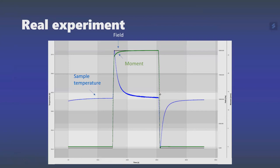That was just a cartoon, but looking at real temperature measurements: we apply field quickly — shown in black — and see the sample heats up quickly. I intentionally didn't isolate the sample properly, so it relaxes back to initial temperature. Removing the field quickly, the sample cools. It's not just a cartoon — we can really do that. This was done in a modified PPMS version that was reprogrammed to make these measurements possible.